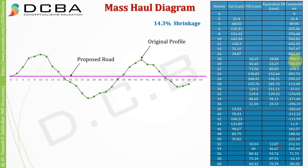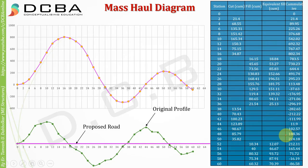Now we have two sets of data: station and cumulative mass. When we plot that, we get a curve which is called the Mass Haul Diagram. This cumulative mass curve that you have drawn is called the Mass Haul Diagram.